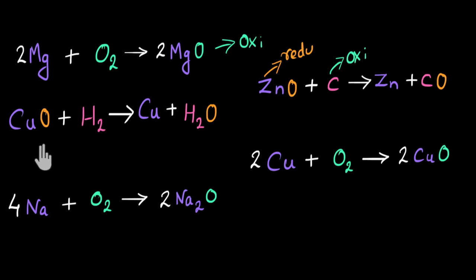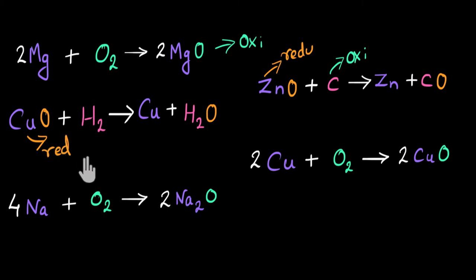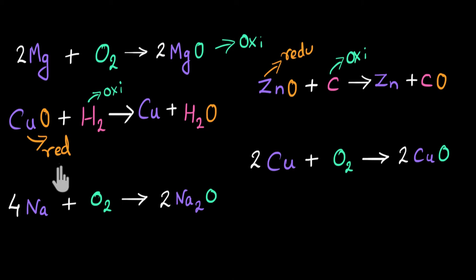In the third reaction, copper oxide is reacting with hydrogen to give us copper and water. If I focus on copper, before the reaction it was combined with oxygen, but after the reaction it has lost its oxygen — so copper is going through a reduction reaction. But if we focus on hydrogen, it did not have oxygen to begin with, but after the reaction it is combined with oxygen — so hydrogen is going through oxidation. In the fourth example, oxygen is getting added to copper and we get copper oxide, so this is an oxidation reaction.